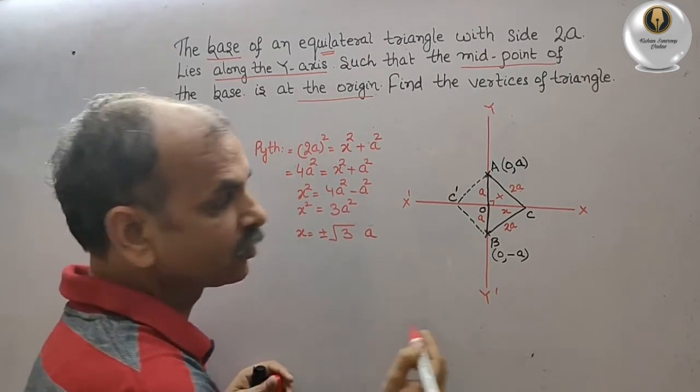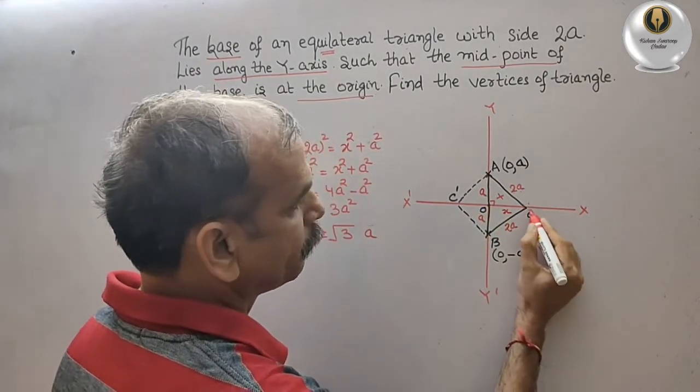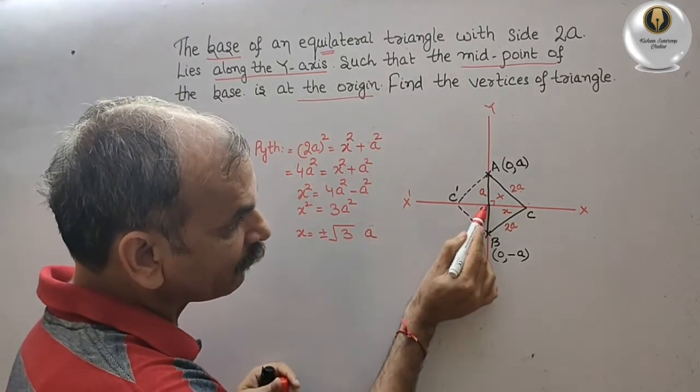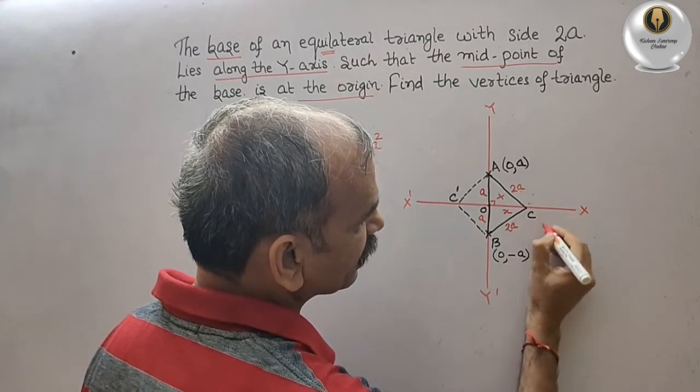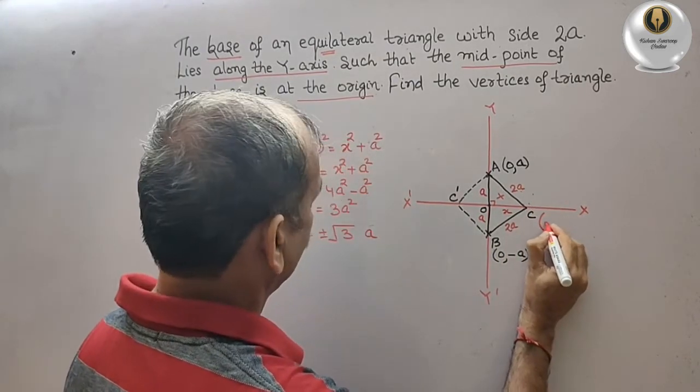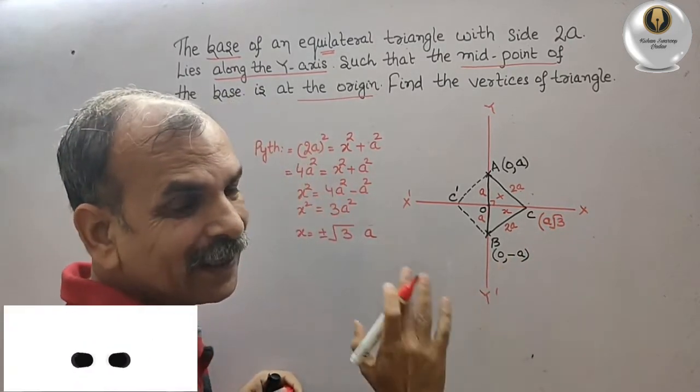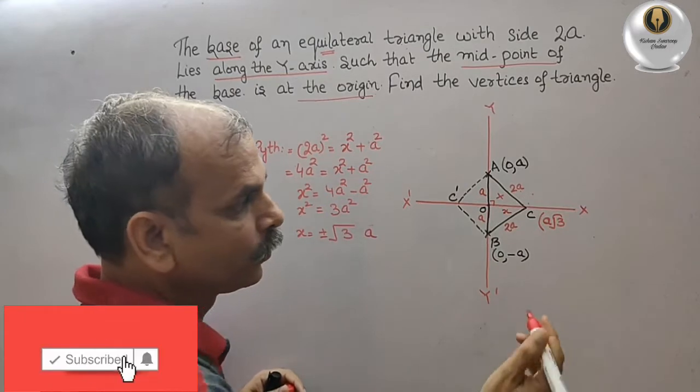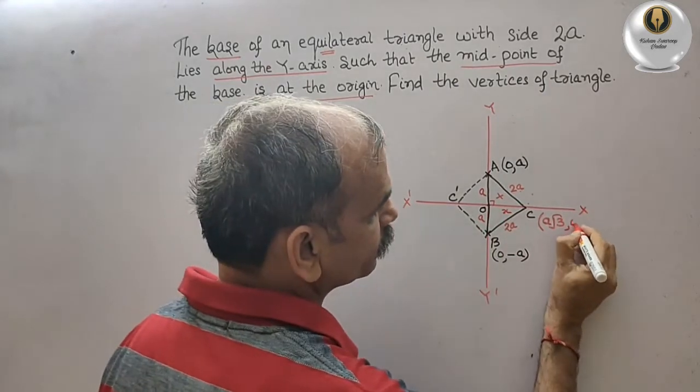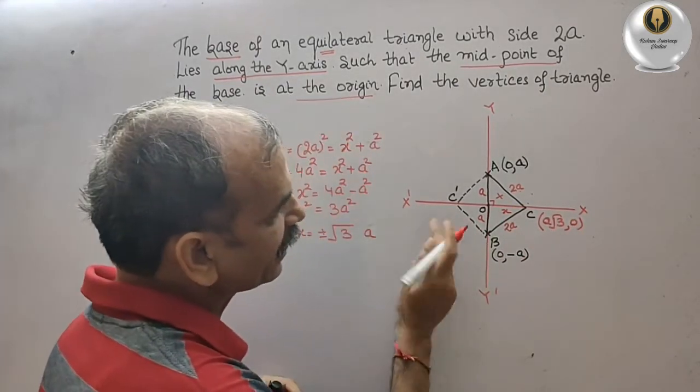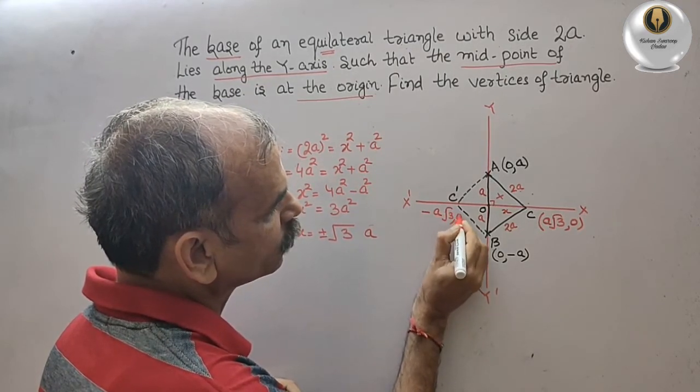So X is this, so that means from here to here it is plus, not minus. Minus will come when it will come here. So the coordinates here will come as C, the coordinates will come as A root 3. We will write like this, A root 3 comma, and Y is 0, so 0. But this side is minus A root 3 comma 0.